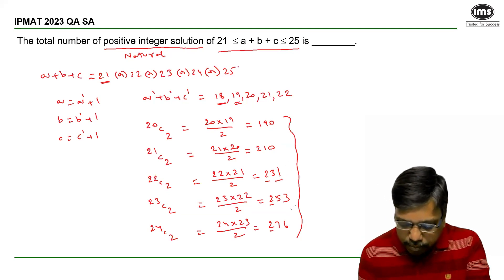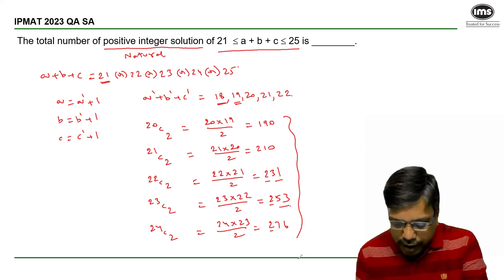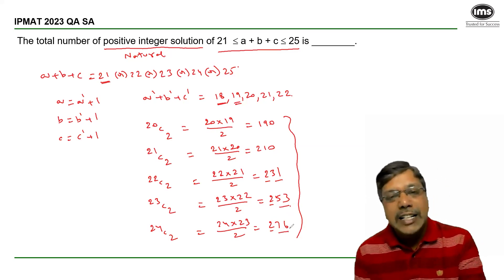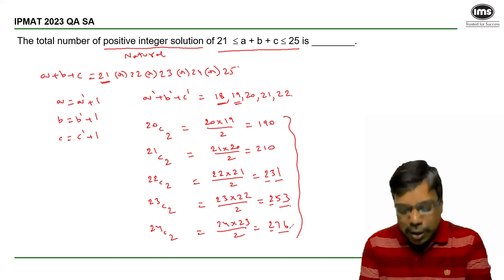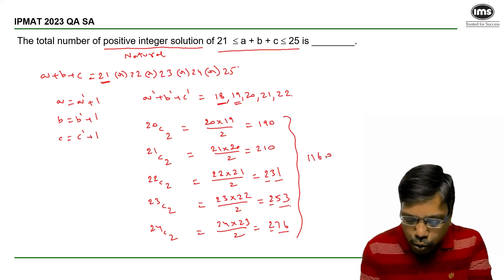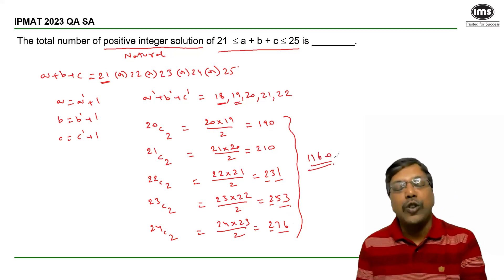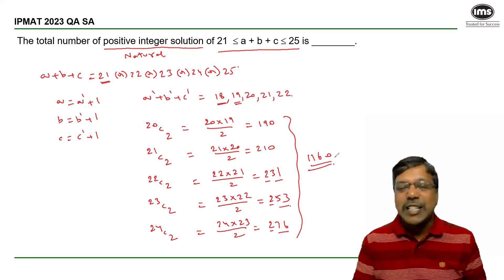31 plus 53 is 84, 84 plus 76 is 160, 1000 plus 160 gives us 1160. So the total number of positive integer solutions is 1160.